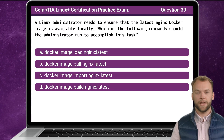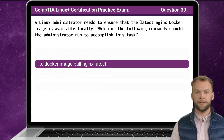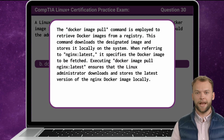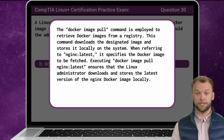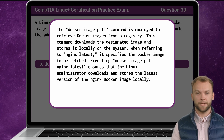Question 30. A Linux administrator needs to ensure that the latest nginx Docker image is available locally. Which of the following commands should the administrator run to accomplish this task? The answer is B: docker image pull nginx:latest. The Docker image pull command is employed to retrieve Docker images from a registry, downloading the designated image and storing it locally. Executing docker image pull nginx:latest ensures the administrator downloads and stores the latest version of the nginx Docker image locally.